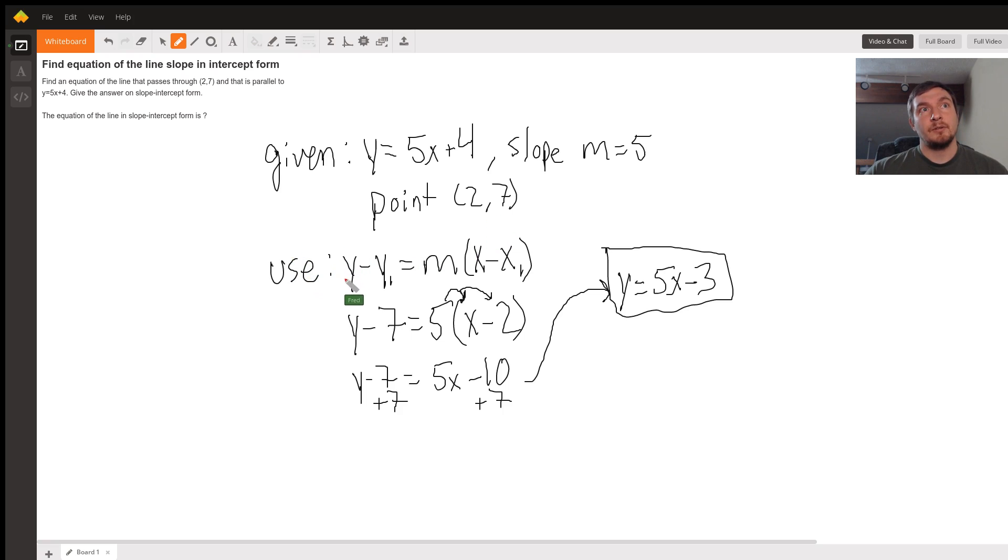So we need to use an equation called the point-slope form. Now what we do with this is, from the point-slope form, we can use the slope that we're given and the point that we're given to find the equation of a line in slope-intercept form. So point-slope form is y minus y1 equals m times the quantity x minus x1, where x1 and y1 are the positions on the point.